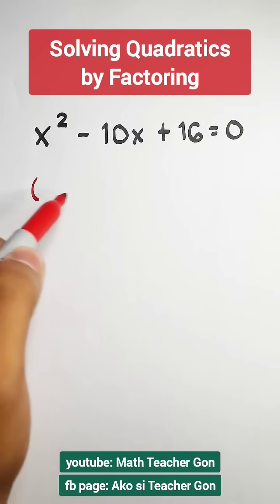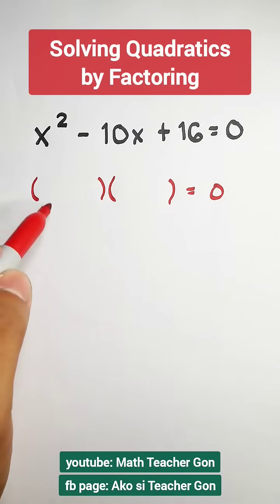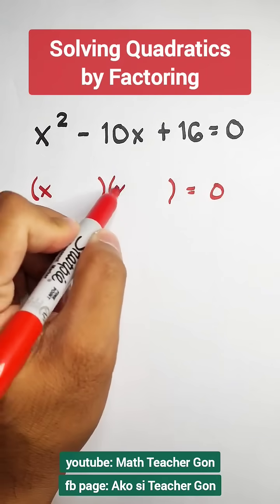What you need to do is to create two parentheses, and then figure out what are the factors of x squared, that is x and x.